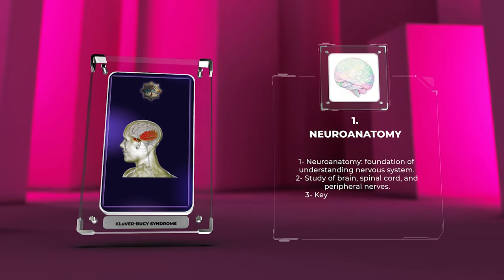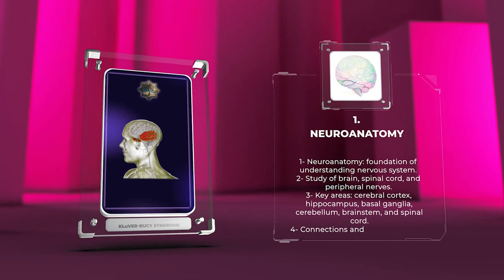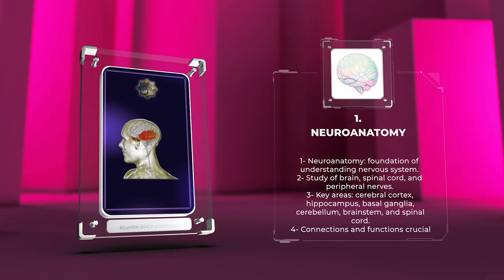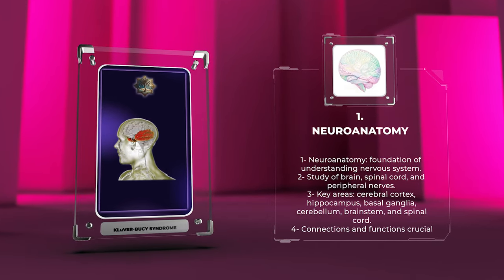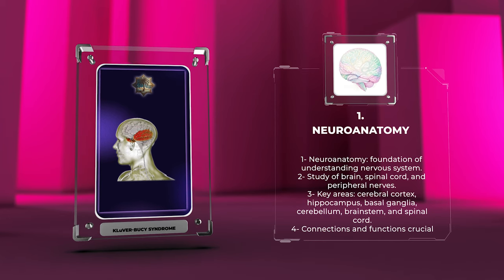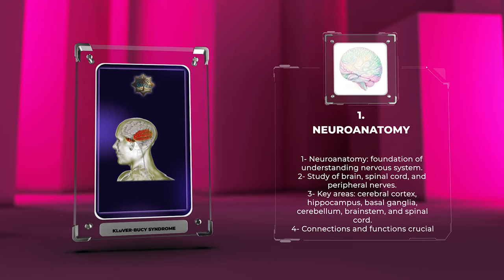It involves the study of the structure and organization of the brain, spinal cord, and peripheral nerves. It encompasses various aspects of neural architecture and organization.